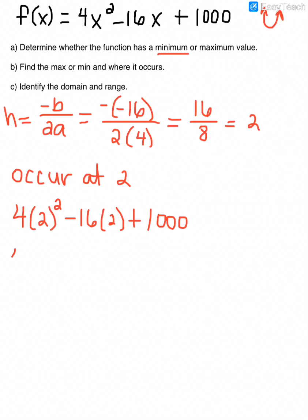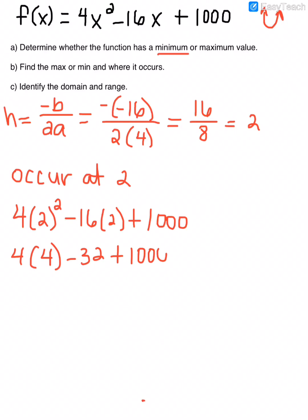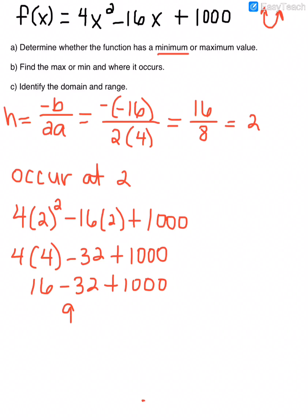The minimum value is whatever f of 2 is, so I'll take 2 and plug it into the function and solve. I get 4 times 4 minus 32 plus 1000. So that's 16 minus 32 plus 1000, which would be 984. So the minimum value is 984.